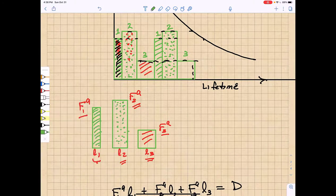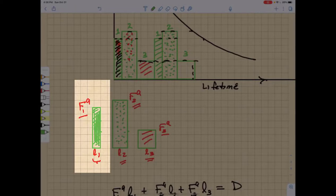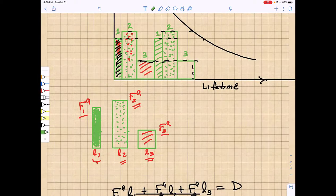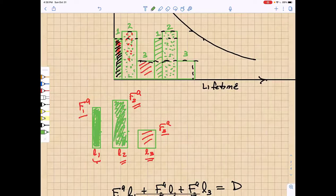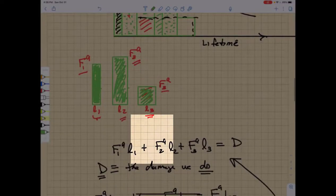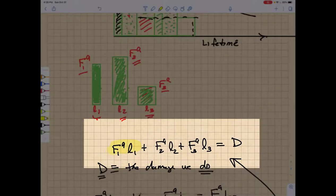I'm going to calculate the area of each of these rectangles. The first rectangle shown here is going to have an area F1 to the a power times little l1, lowercase l1. This rectangle is going to have F2 to the a power times l2. And this one F3 to the a power times l3. We add those up. We add F1 to the a power times l1 plus F2 times l2, F3 times l3. And that gives us a measure of damage.